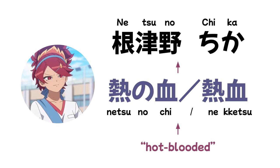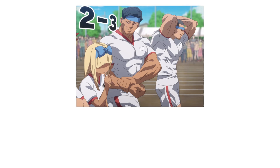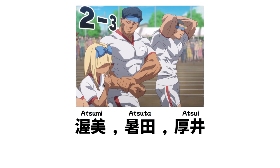Next up are three of Netsu no Senpai's teammates from the school sports day. Not named in the anime but named in the manga, their names from left to right are Atsumi, Atsuta, and Atsui. These come from the same root word as Netsu no's, though pronounced differently — 'Atsui,' meaning 'hot' or 'passionate.'